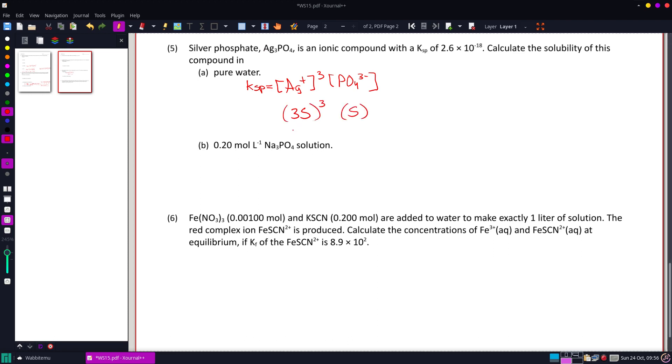This gets cubed. That's going to be three times three times three. So 27S cubed times S. Our Ksp should be equal to 27S to the fourth.